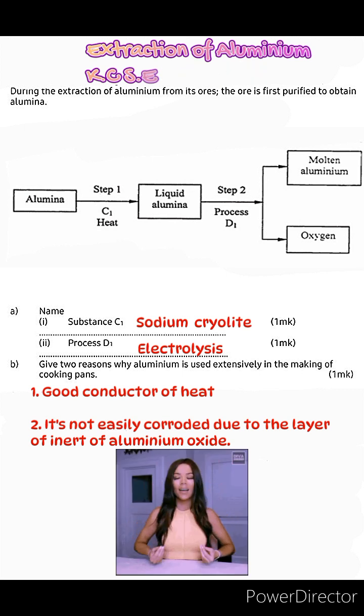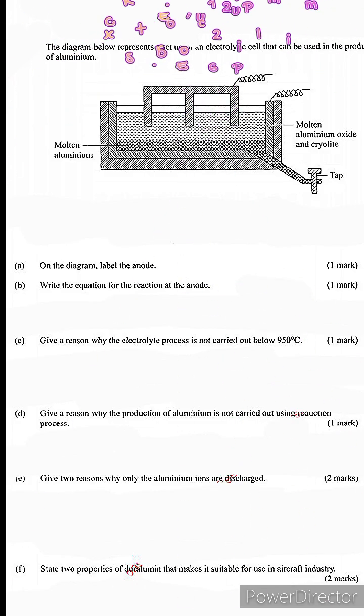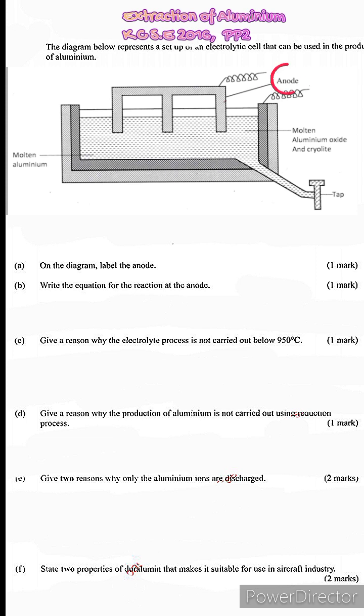Let's take a deep breath before proceeding to the next question. Now our next question is from 2016 paper two. The diagram below represents a setup of an electrolytic cell that can be used in the production of aluminum. A. On the diagram label the anode. Okay. So there we have it. That's our anode. And then just maybe to remind ourselves that is the cathode.